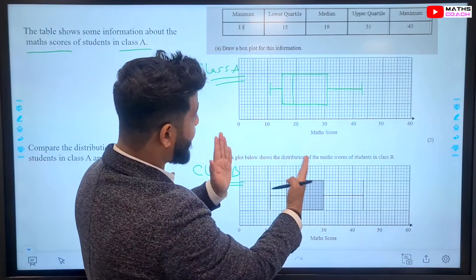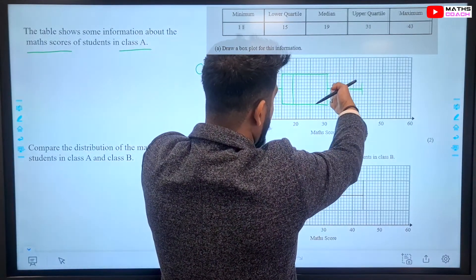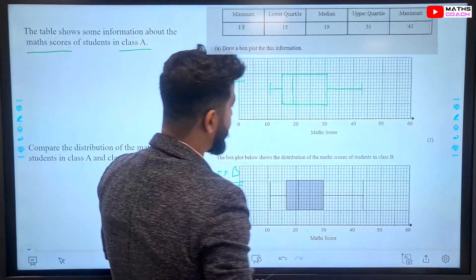The first thing that you might want to compare is the distribution of data. You could see that this has a wider interquartile range, whereas this has a more narrower interquartile range.